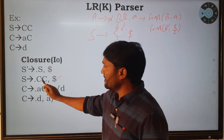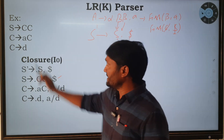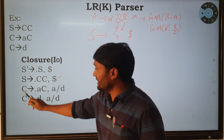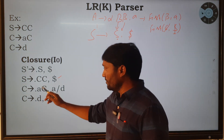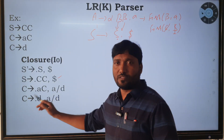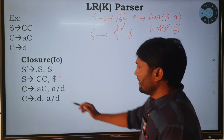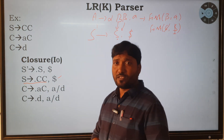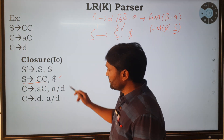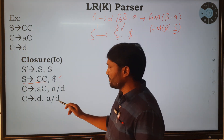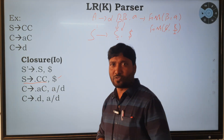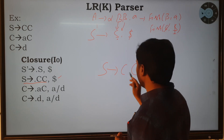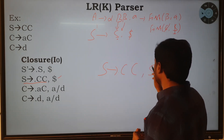After that there is a capital C. C has two productions in the given grammar. Add those two productions: C → •aC and C → •d. We need to calculate the lookahead symbols for these two productions from the previous production S → •CC with input string dollar.